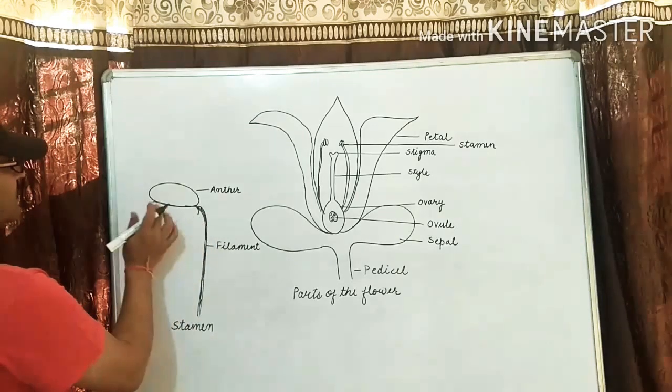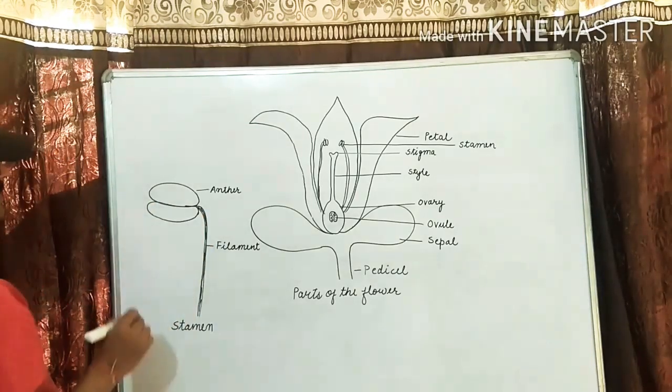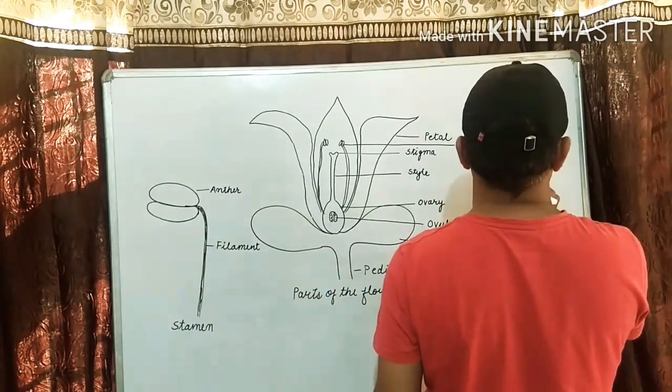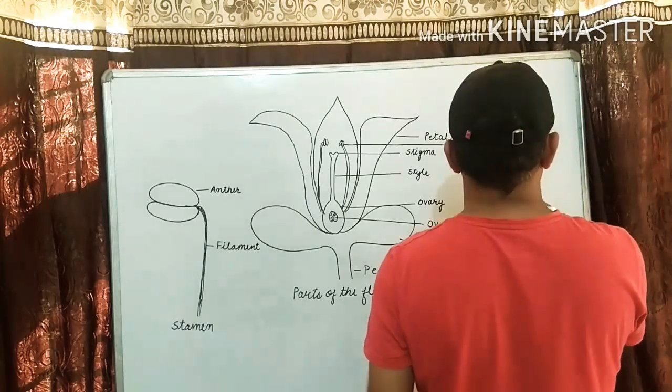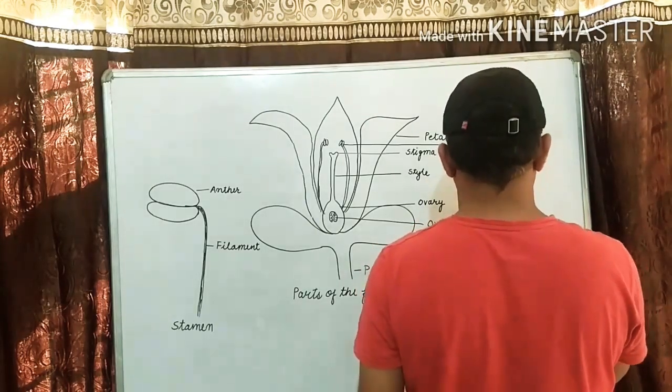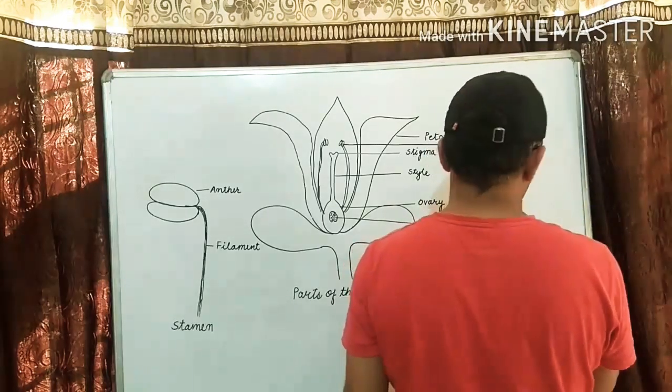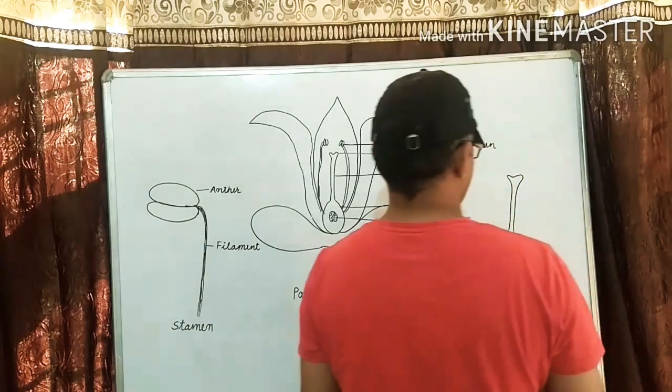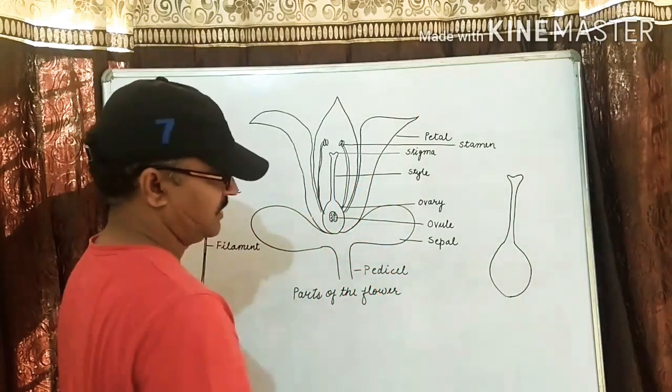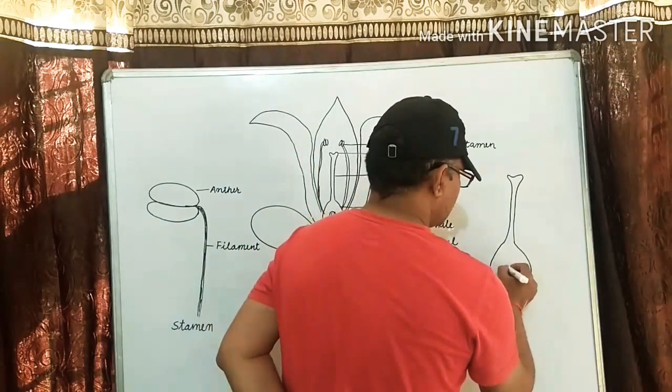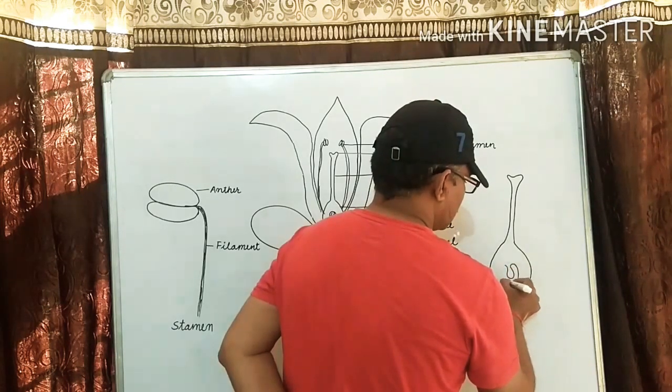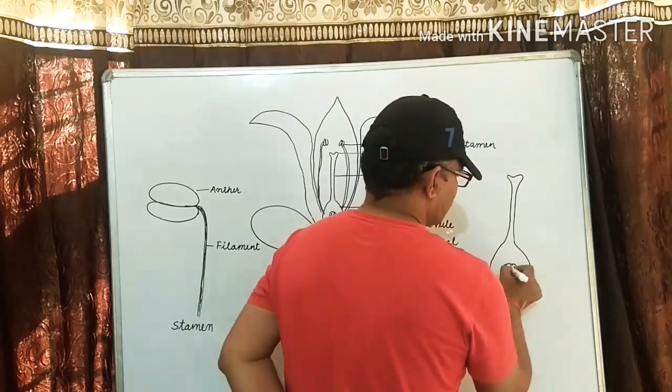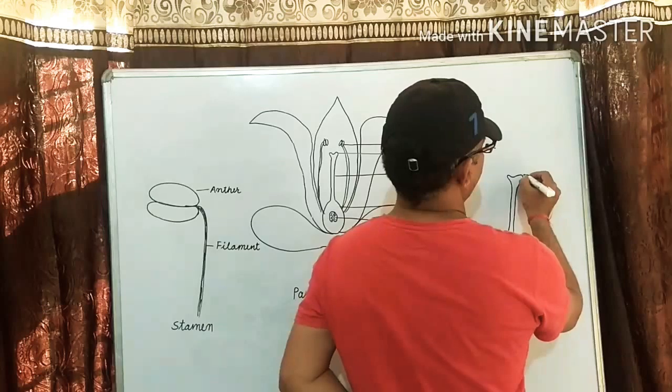Now pistil. This is the shape of the pistil. Inside it, there is ovule. It has three parts.